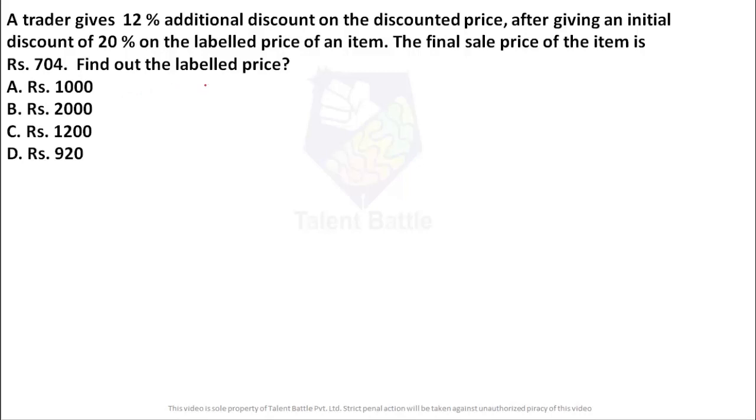Now one thing you need to understand to solve this question. Suppose if we consider that labeled price over here, whenever we're going to give discount on that particular price, we're going to get a selling price. Whenever you visit any store and there's any item, whatever labeled price is over there, whenever they provide discount on that, they're going to provide you at that particular price. So it will be a selling price. Now in this case what has happened? There have been two discounts.